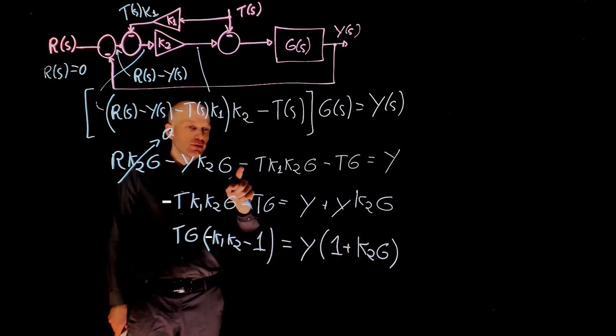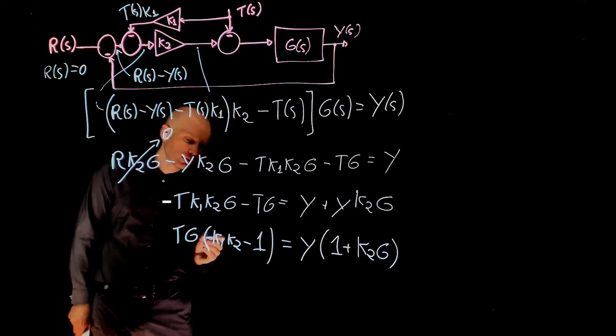That gives negative T times G times K1 times K2 minus 1 equals Y times 1 plus K2 times G. I believe I made a mistake. I forgot this negative sign here. So let's add it right there.